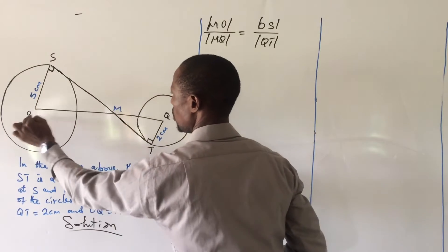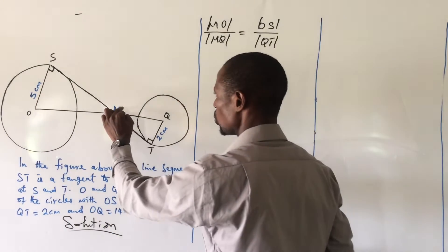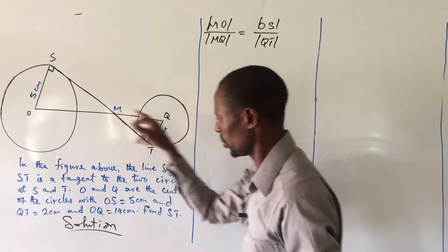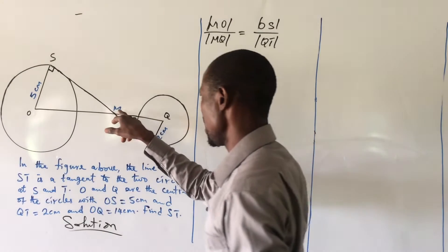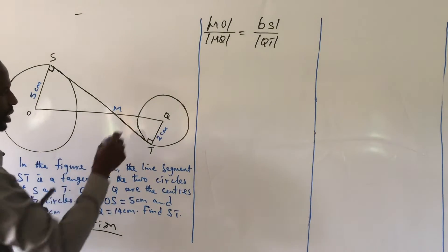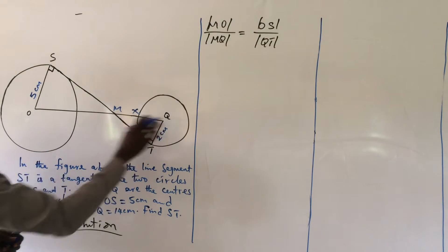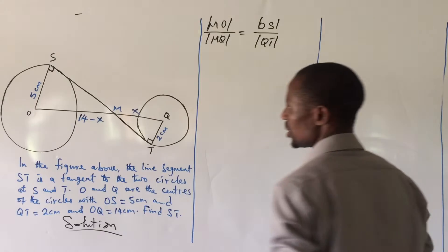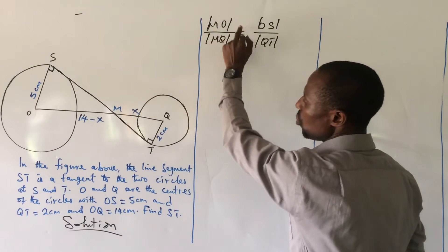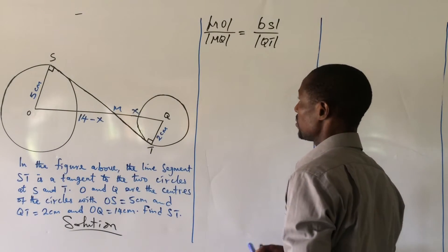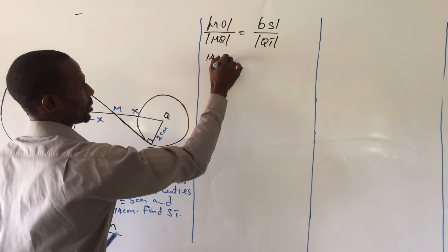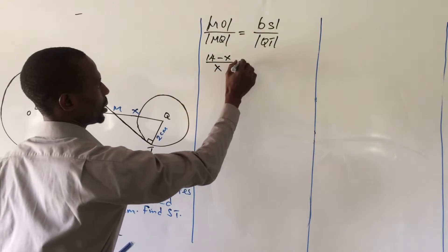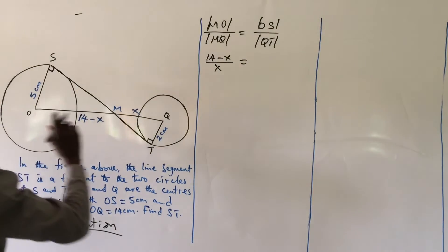Looking at the diagram, we don't know MO and we don't know MQ, but we know OQ which is 14 cm. Let's label MQ as x, so automatically MO is going to be 14 minus x. Substituting into our formula: (14 − x) over x equals OX over QT, which is 5 over 2.